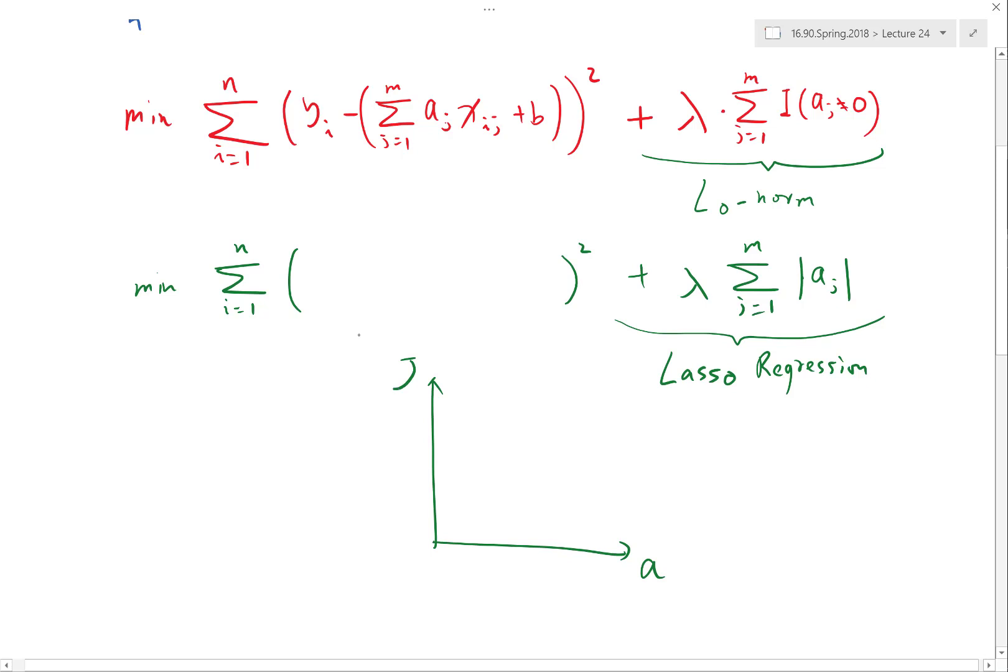Without adding the lasso term, let's say lambda equal to zero, I usually have a quadratic form like this. Now imagine I start to add a small lambda. What does it look like with a small lambda? When A is equal to zero, it doesn't change anything. When A is positive, it starts to add a constant slope, so my objective function is going to look something like that. Basically, the larger my absolute value of A is, the larger the deviation from the green line is.